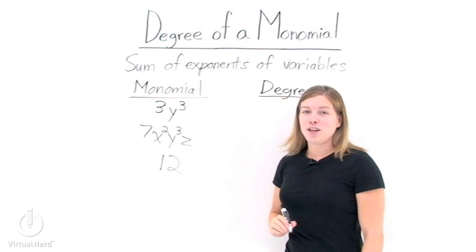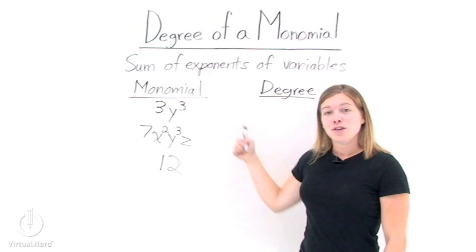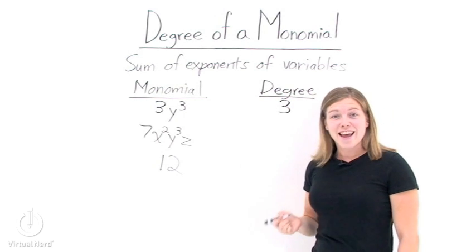So take 3y cubed. Well, there's only one variable in that, y cubed. So we just take the exponent. The degree of that monomial is 3.